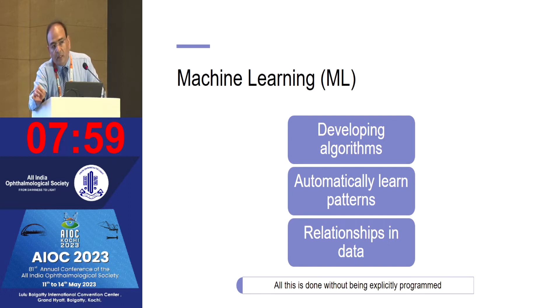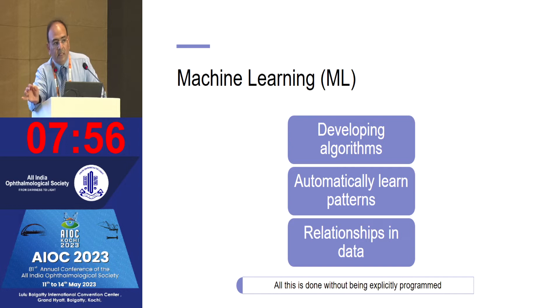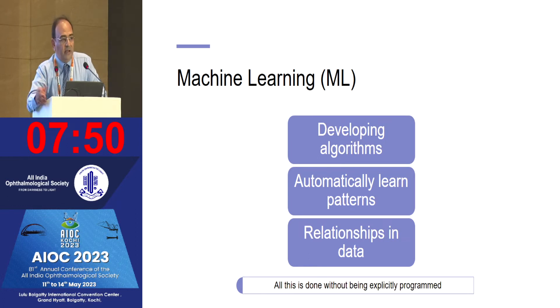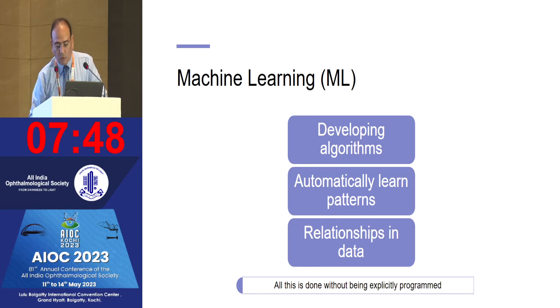You tell the machine that this is a microaneurysm, this is a hemorrhage, and this is new vascularization — so the next time the machine sees that finding, it can identify it on its own and refine its recognition on its own.